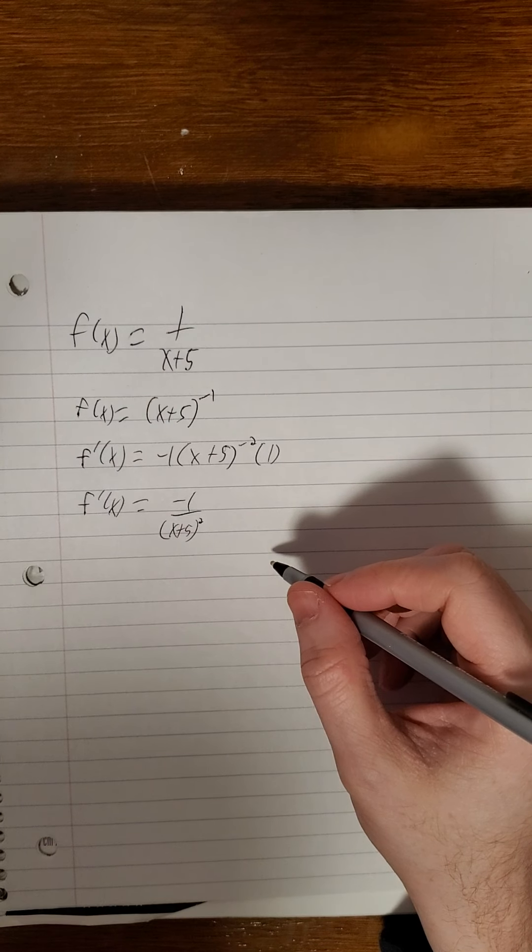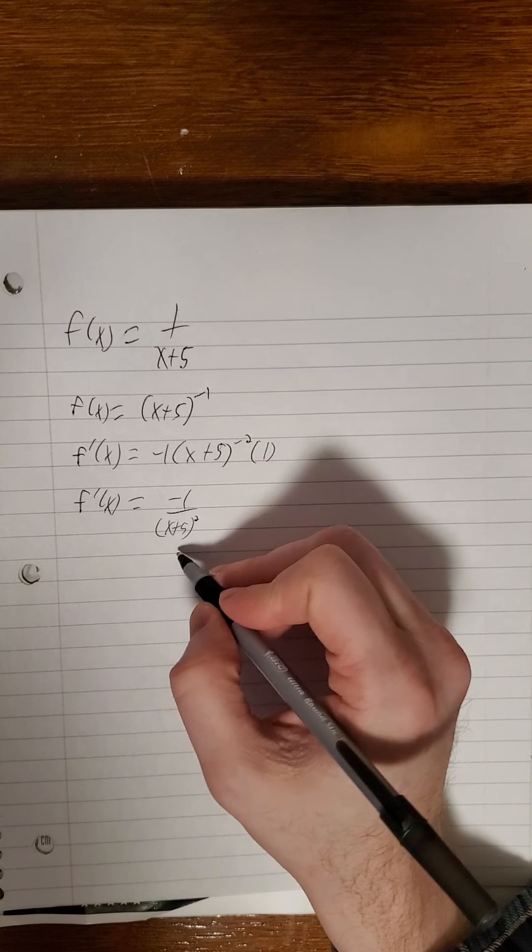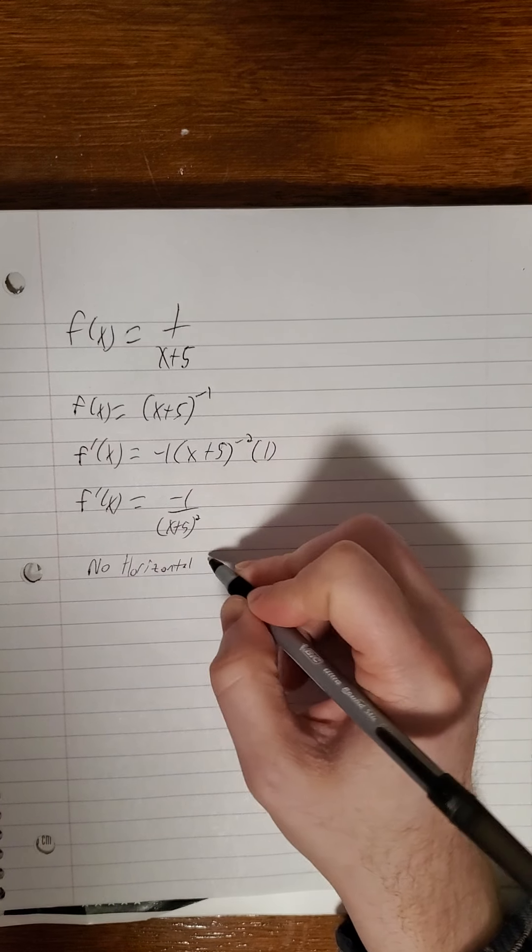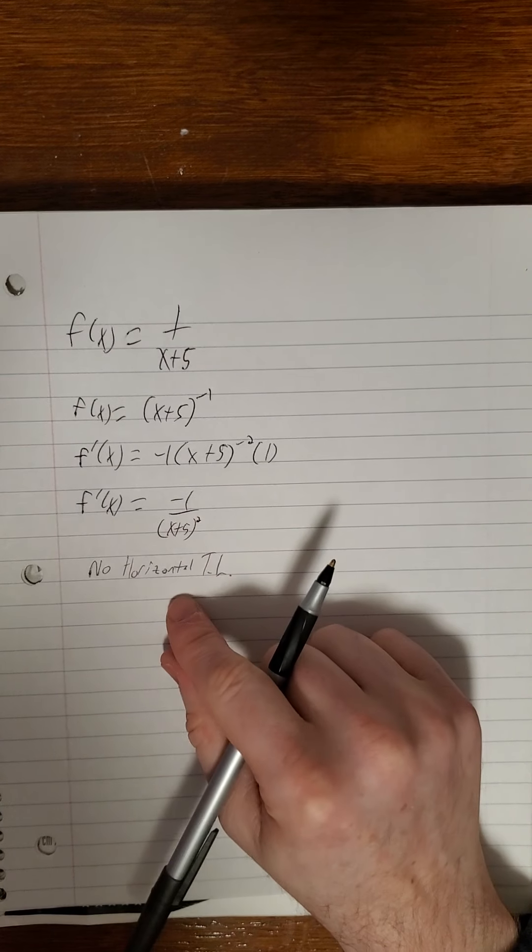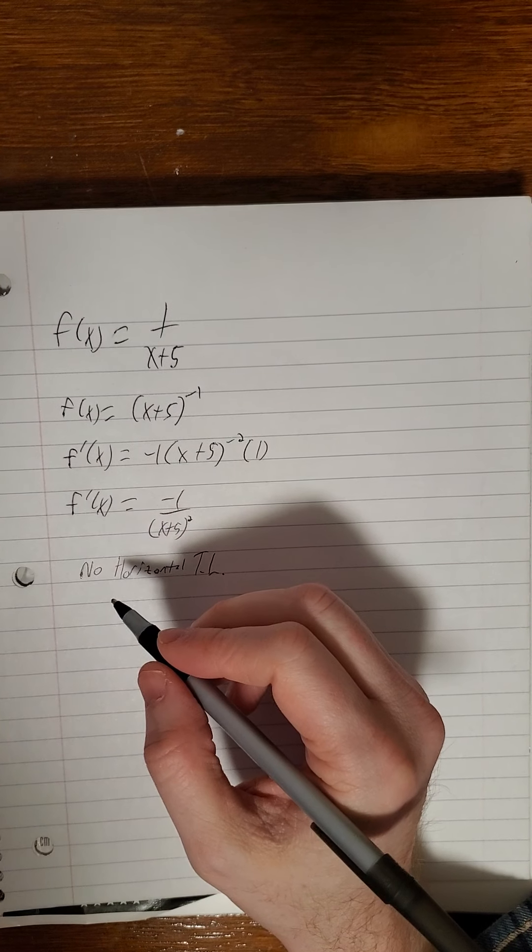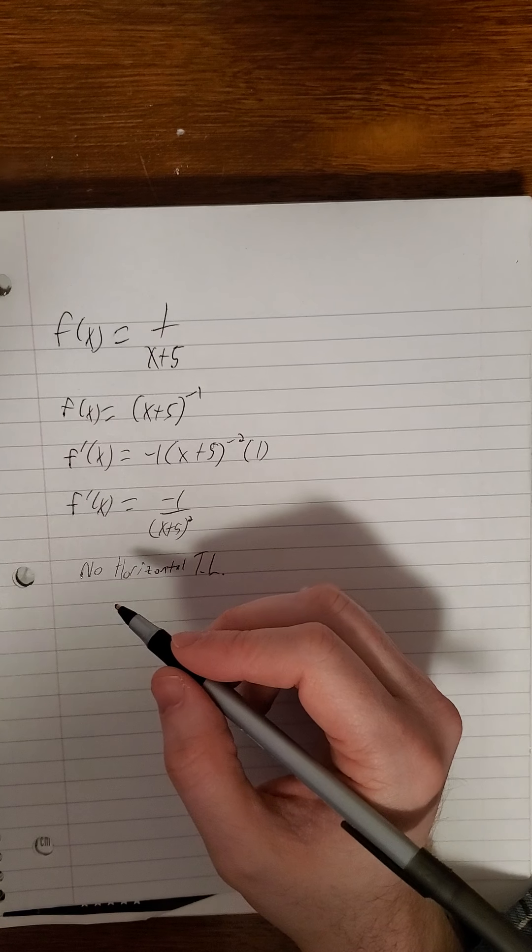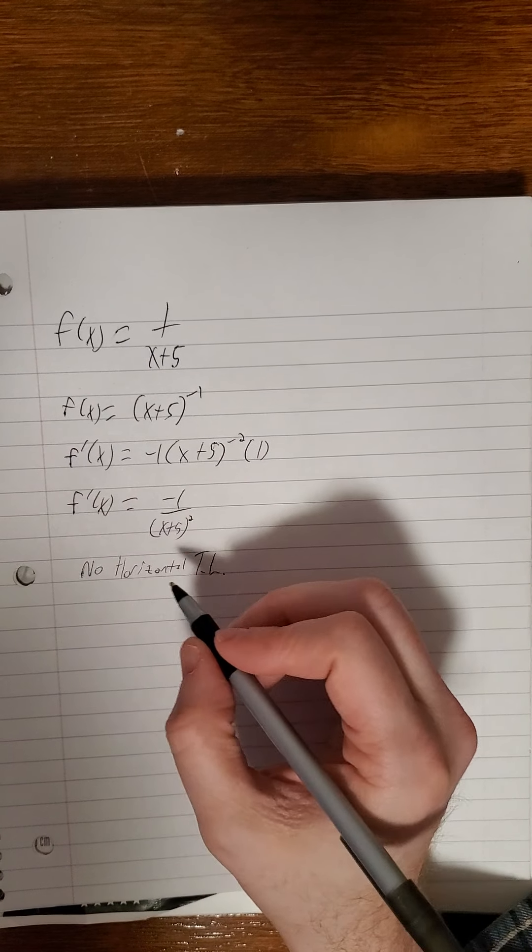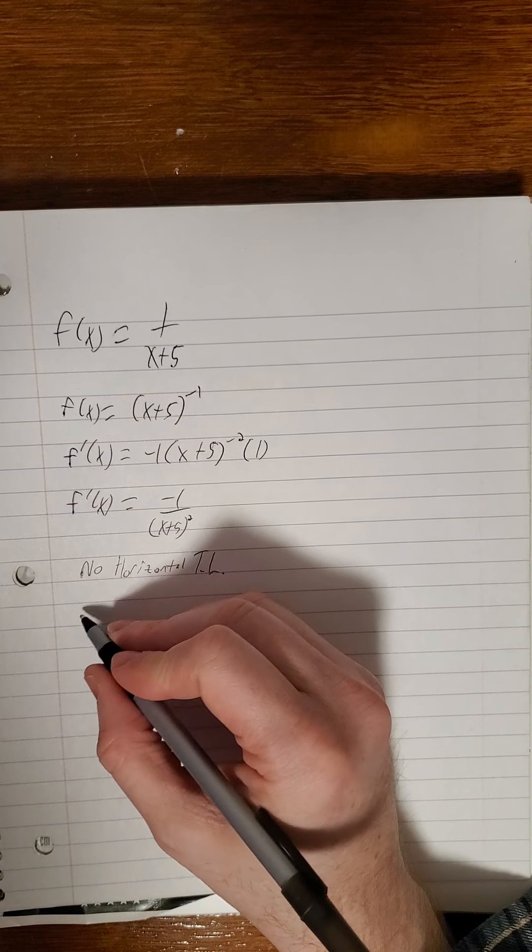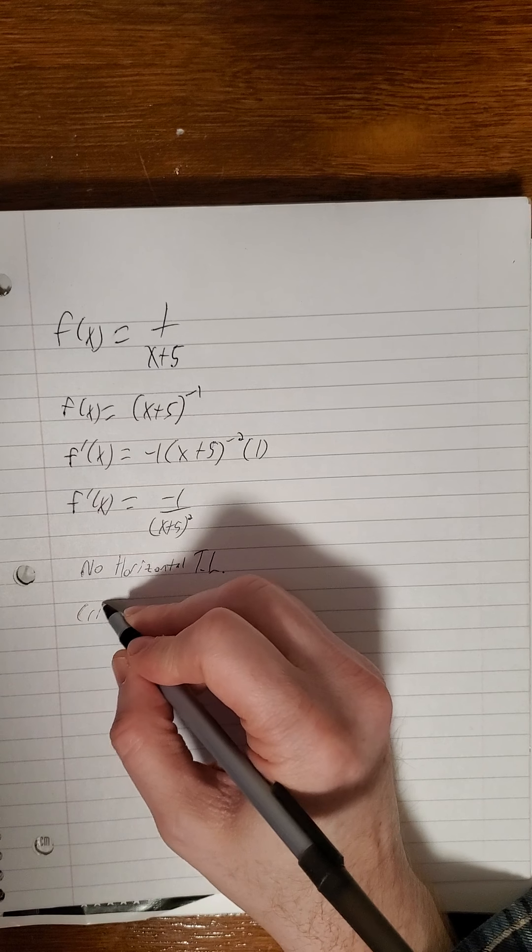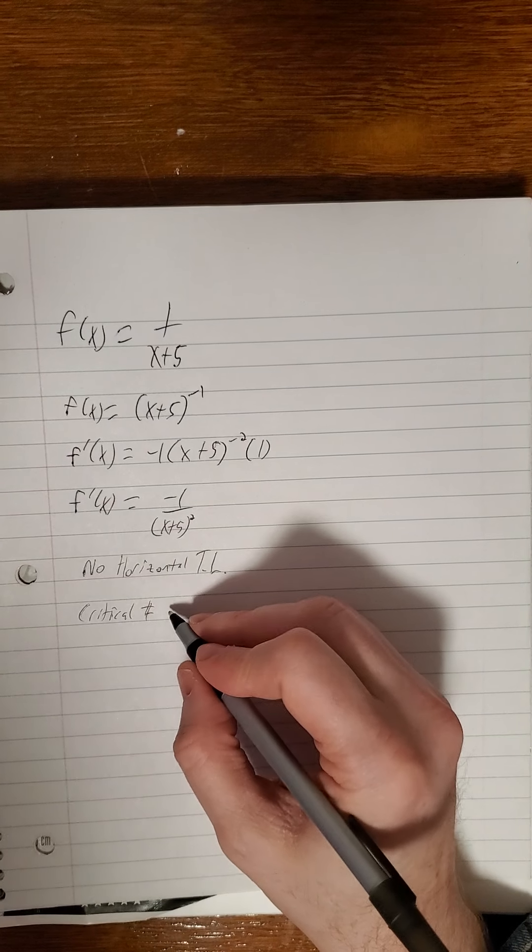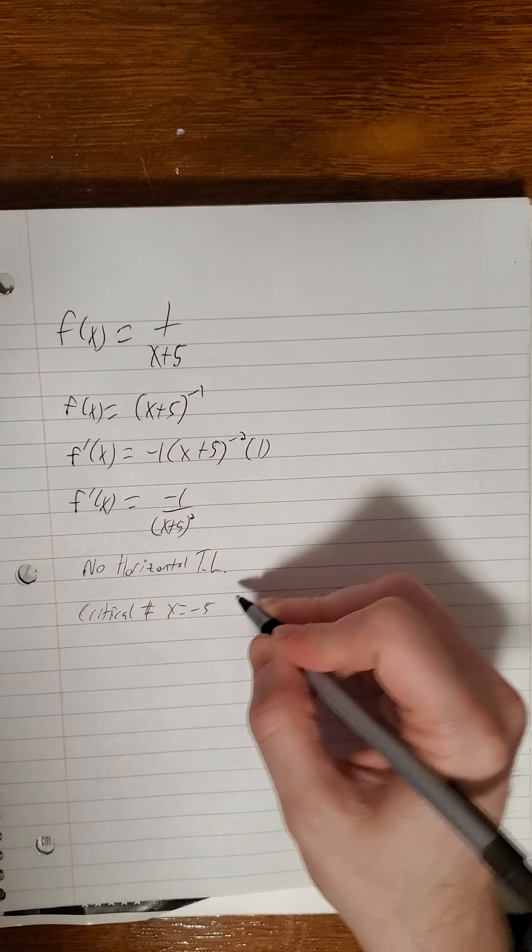So this one, like before, we have no horizontal tangent line. See if you can convince yourself why that is. If you get stuck on that, pop back into the class and ask me about that. But we do have a critical number. Negative 5 would make us divide by 0. So x equals negative 5 is our critical number.